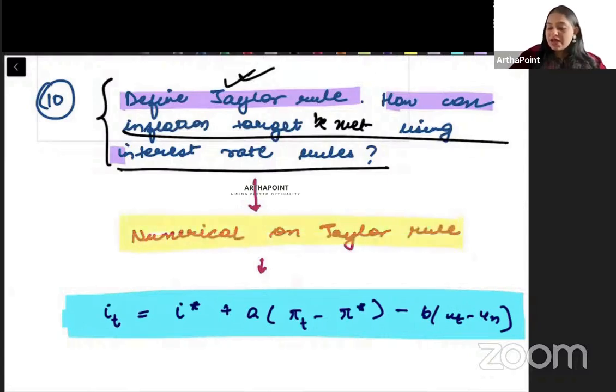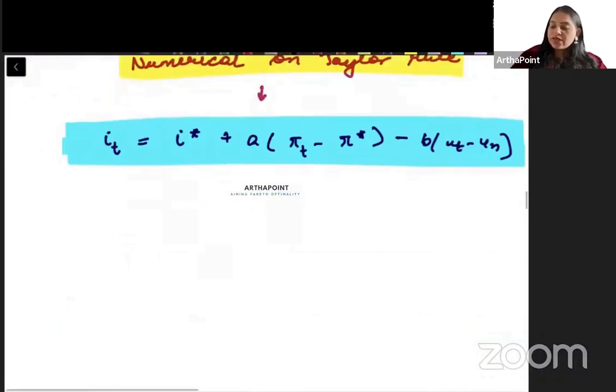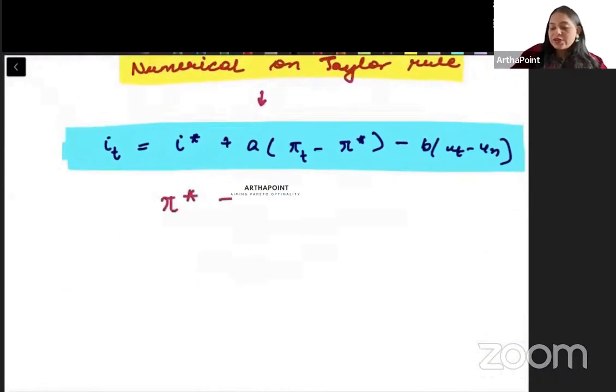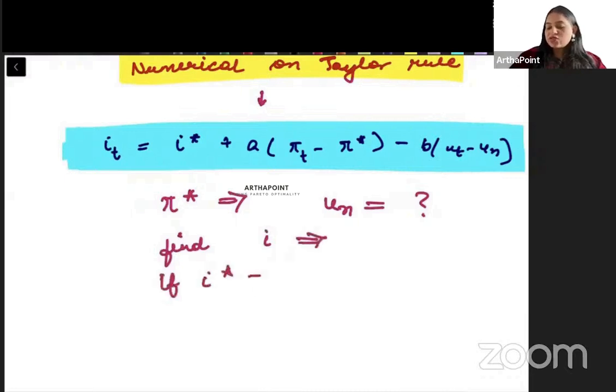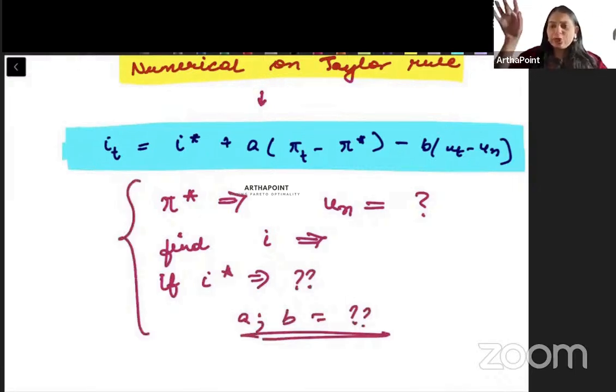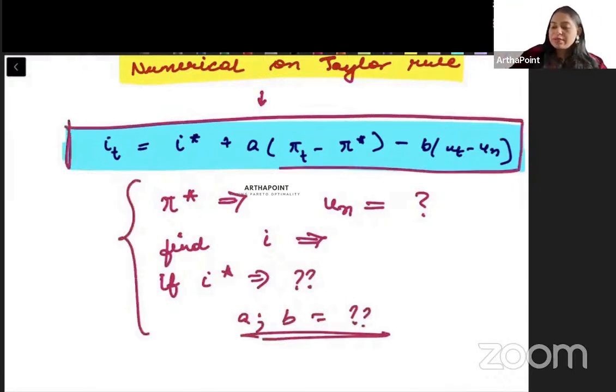there can be a numerical which can be asked on Taylor rule. Toh what they will do na? They will give you your target inflation. They will give you your natural rate of unemployment and they may ask you that find your interest rate in the economy. If your target interest rate is this much and the parameters a and b will be given to you. Toh something or the other kuch manipulate karke using this equation they may go ahead and they may give you a numerical in exam.